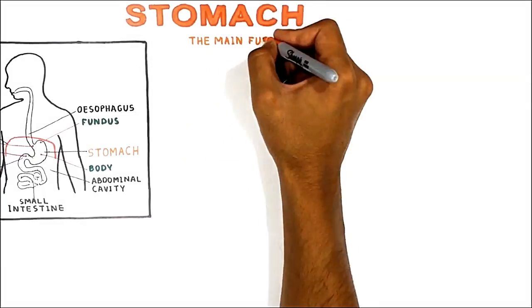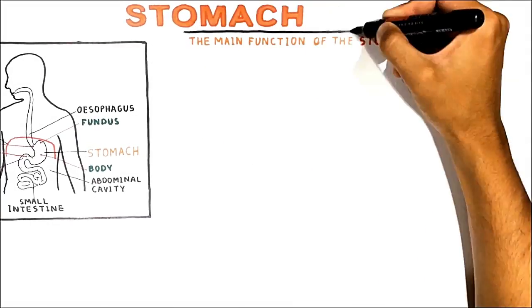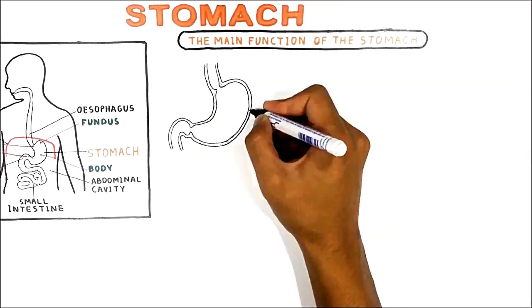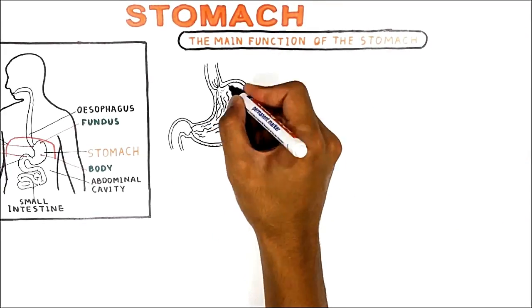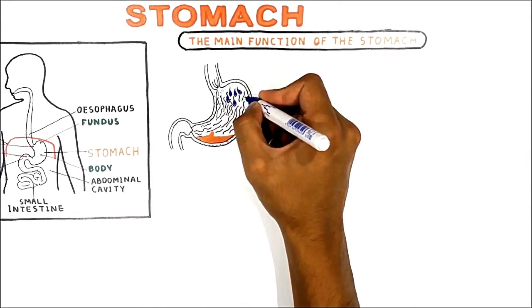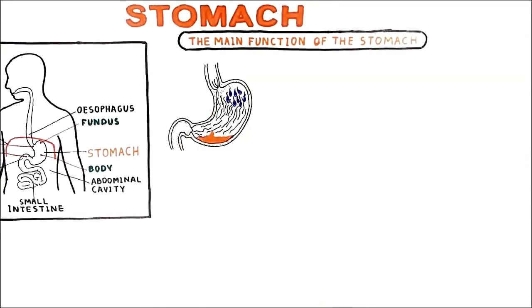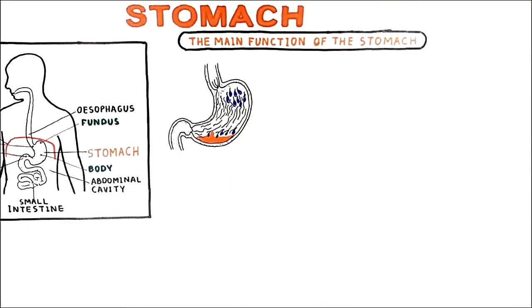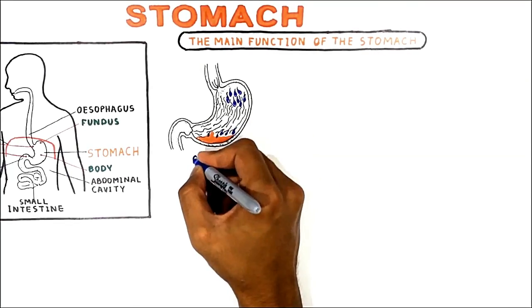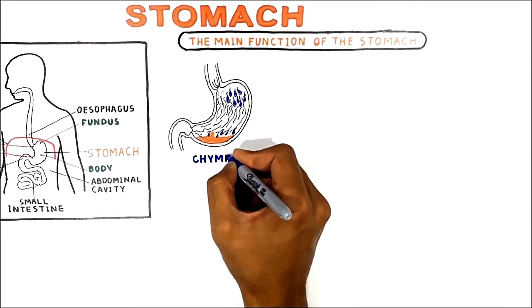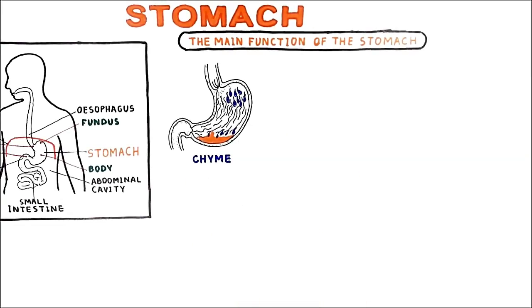The stomach has many functions. First, when we eat and food enters the stomach, the stomach mixes the saliva, food, and gastric juice that it secretes to form what is called chyme.